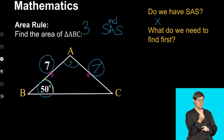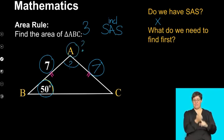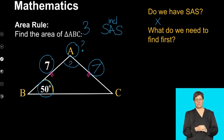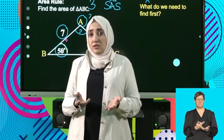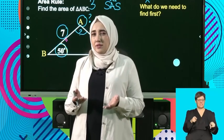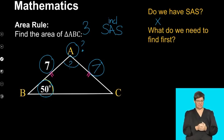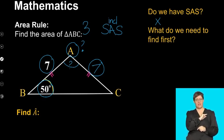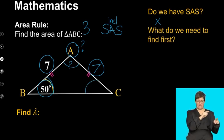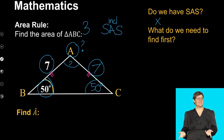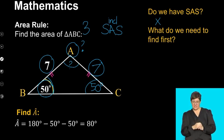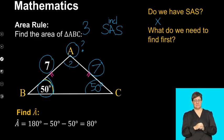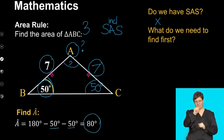What do we need to find first in order to use side, angle, side? We need to find angle A. Now it's pretty simple because we've got an isosceles triangle, and if we know the two base angles, it's pretty simple to find the third angle. So finding A: because this is an isosceles triangle, if this angle is 50 degrees, then angle C will also be 50 degrees. And now we just use the fact that the three angles of a triangle are equal to 180 degrees to find the third angle. So A will be 180 degrees minus the two angles, and so A has a value of 80 degrees.